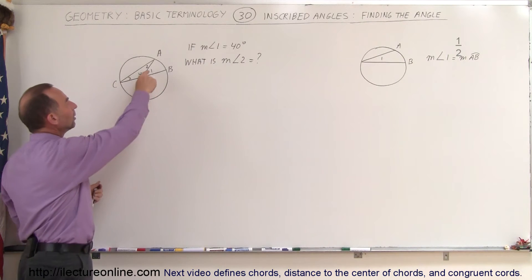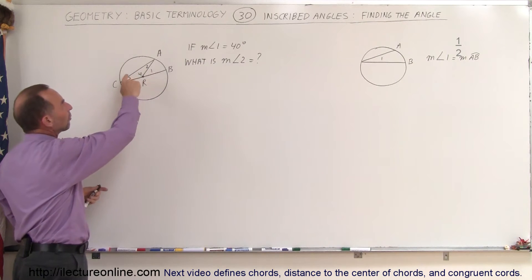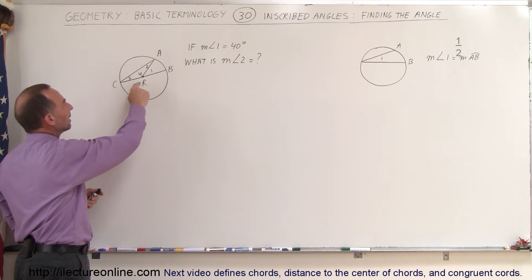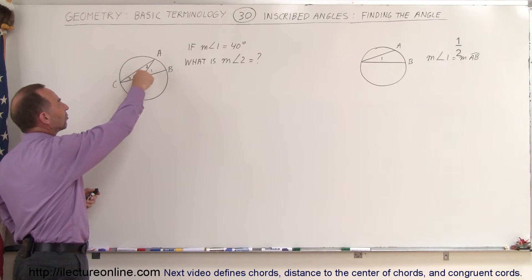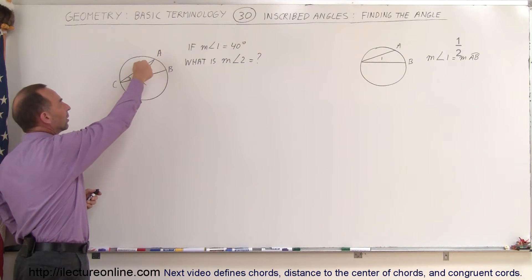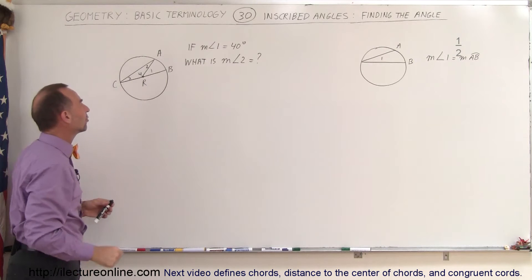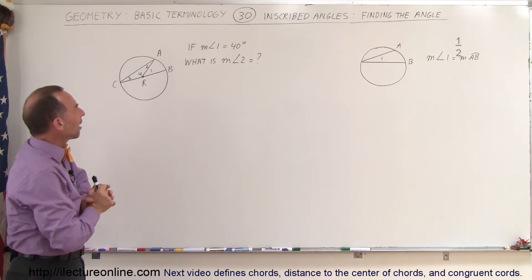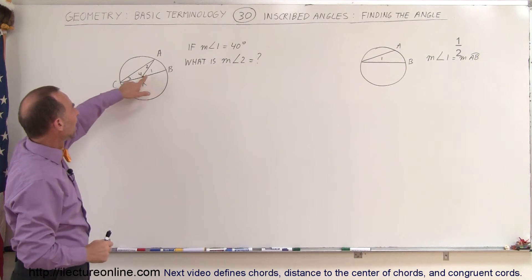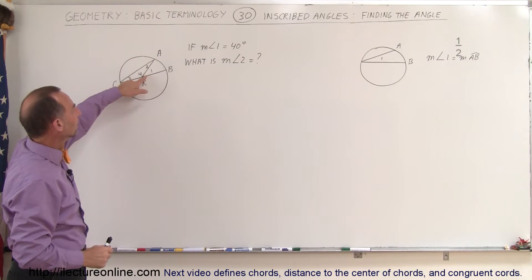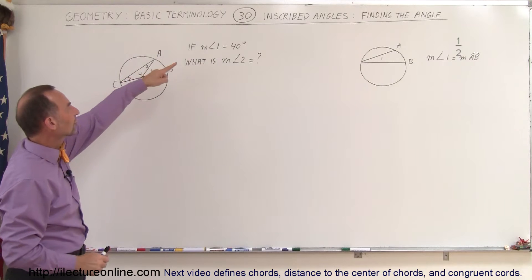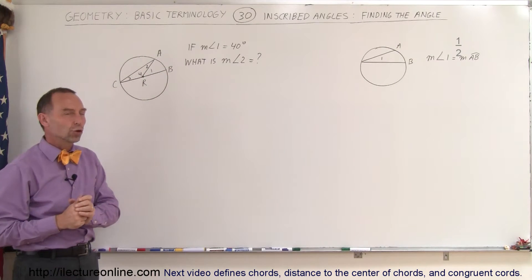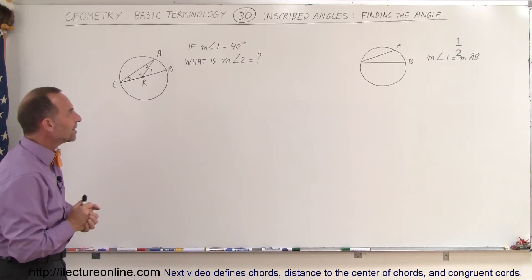We have central angle 1, inscribed angle 3, angle 4, and angle 2. So if the measure of angle 1, the central angle, is equal to 40 degrees, what is the measure of angle 2? How do you find that?